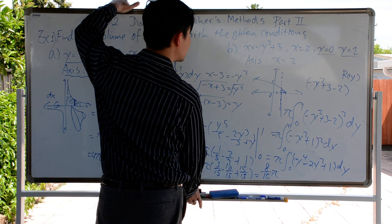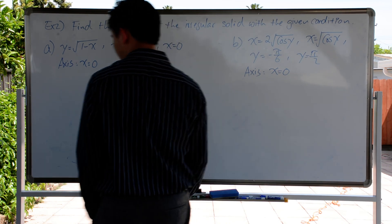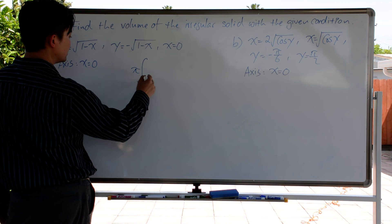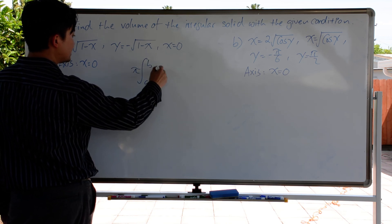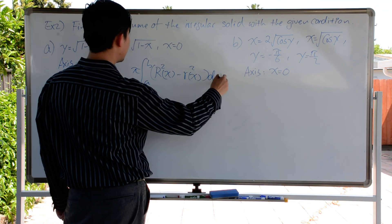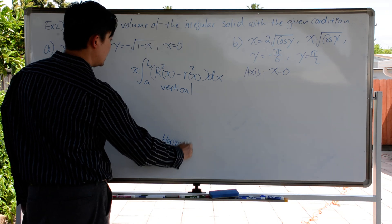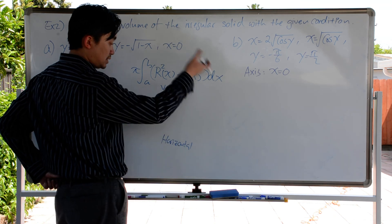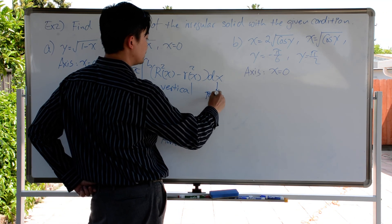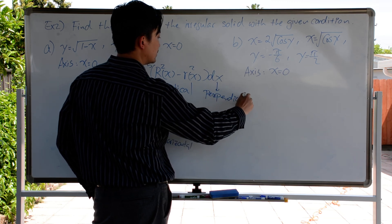Now let's look at the Washer Method. The Washer Method is quite similar, but instead of dealing with one radius, we have two radii — an outer and an inner radius. The formula is pi times the integral from A to B of capital R(x) squared minus little r(x) squared, times dx. That's for the vertical case. The dx is always the indicator, and the indicator is always perpendicular to the revolution axis.